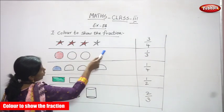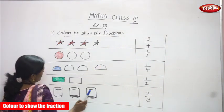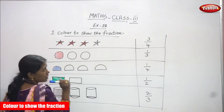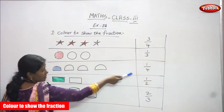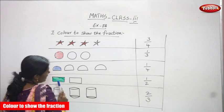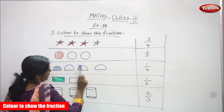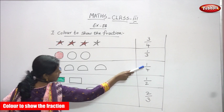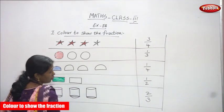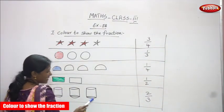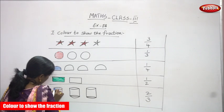Here, how many stars? Four stars. I shaded only three stars, that is 3/4 or 3 by 4 fraction. Here, three circles — I shaded only one circle, that is called as 1 by 3. Here, four half circles — I shaded only one half circle, so that is 1 by 4. Here, two rectangles — I shaded only one rectangle, that is called as 1 by 2, or we can call it as half. Here, four half circles but I shaded only one half circle, that is 1 by 4 or quarter. This is two rectangles — I shaded only one rectangle, that is 1 by 2 or half. Here, three cylinders — I am going to shade only two cylinders, so that is 2 by 3, otherwise two-thirds.